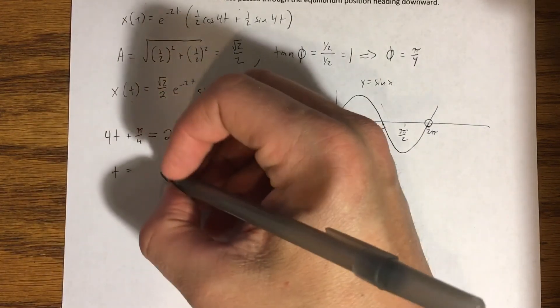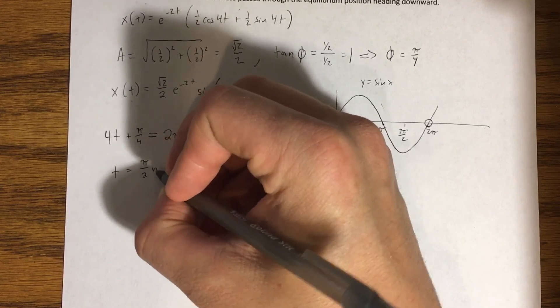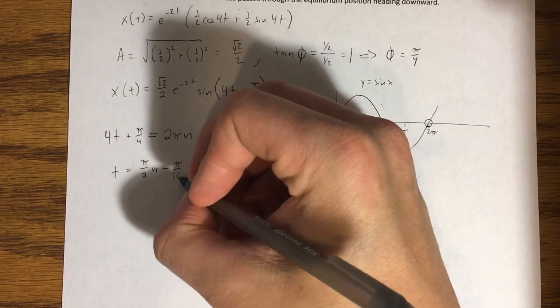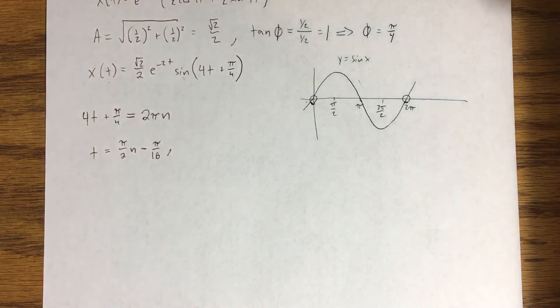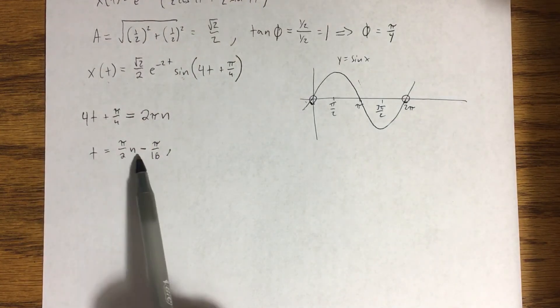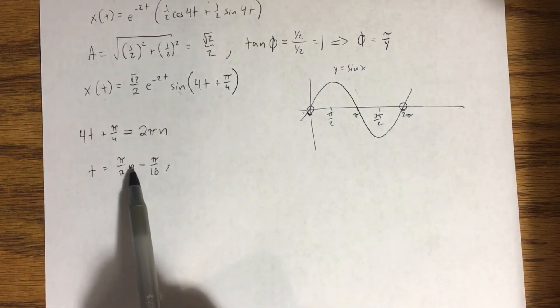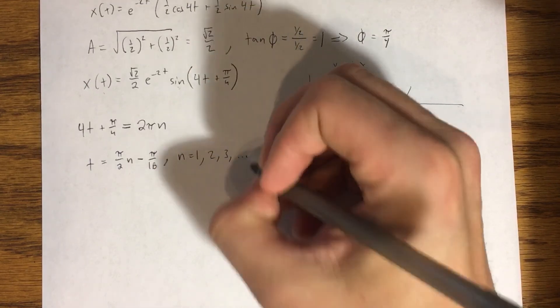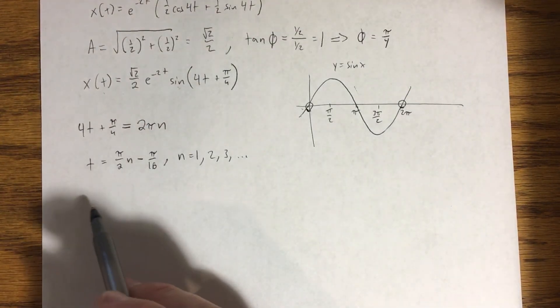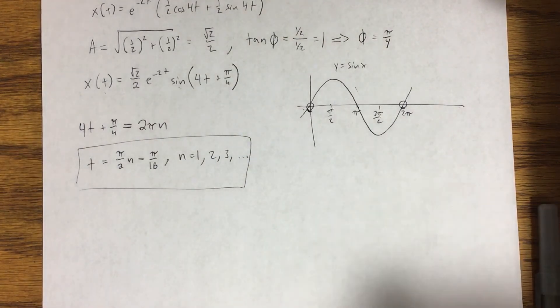If I solve this for t, I get t equals this would become pi over 2 n minus pi over 16. Did a little bit of algebra there. I'm sure you can fill in the blanks. And then I need to determine what n is allowed to equal. n cannot equal zero, because if it was, then t would equal negative pi over 16. And we're not considering negative times here. Time needs to be greater than or equal to zero. But if n equals one, I get my first positive number out of this thing. So n can equal one, two, three, or any other positive integer from there. Okay, so that answers that question. And that also wraps up section 5.1.